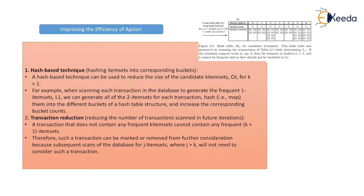The first technique is the hash-based technique: hashing the item set into the corresponding buckets. A hash-based technique can be used to reduce the size of a candidate item set for k greater than 1.